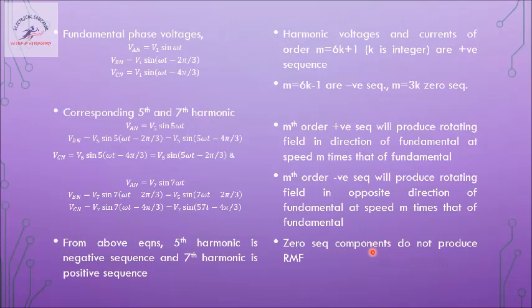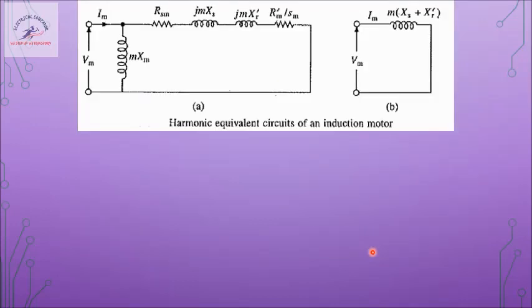To produce a rotating magnetic field, a phase difference of 120° is needed. Zero sequence components have no phase difference, so they do not produce any rotating magnetic field. Now, we have already seen the equivalent circuit of an induction motor in the earlier analysis part of this module, where the torque equation and rotor current equation were derived. The same circuit is analogous here, but the term m appears several times, representing the harmonic order.